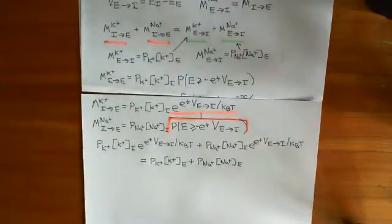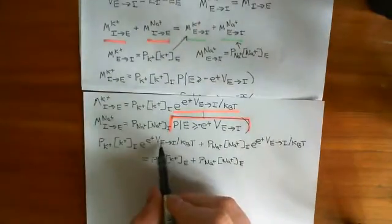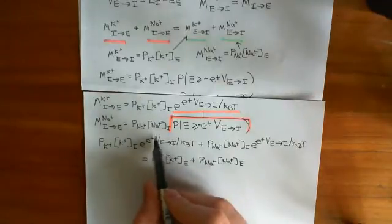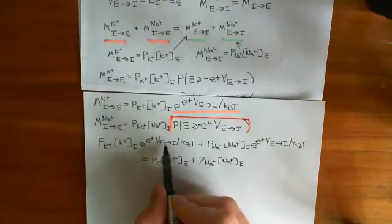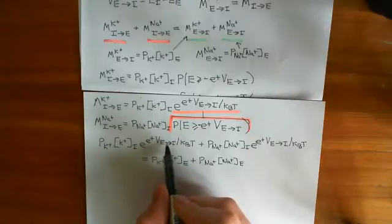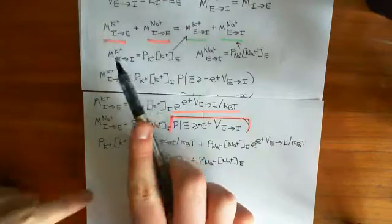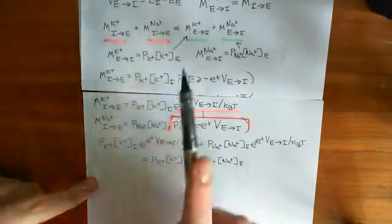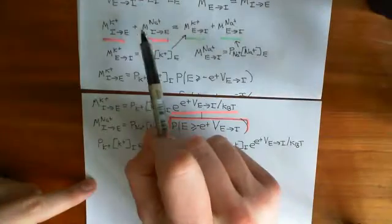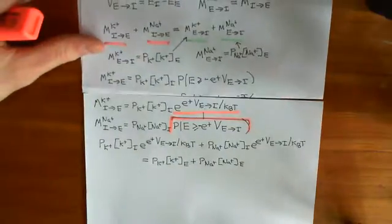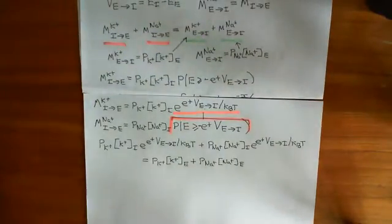If these two sides are going to equal each other, that fixes the value of the voltage. If this equation is going to be true, there is some value of the voltage that will make it true. The value of the voltage across the membrane that makes this true is the resting membrane potential, because at resting membrane potential these movements are equal to one another — there is no net movement of positive charge across the membrane. That is when you're at electrical equilibrium.